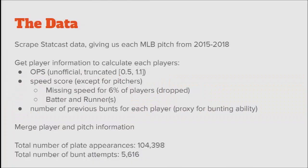We scraped StatCast data and got every single pitch from 2015 to 2018, those four seasons. We calculated OPS — it's sort of unofficial — and truncated it between 0.5 and 1.1 because you occasionally get OPS values of like five, which is unreasonable. We got a speed score, which is missing for 6% of players, so we just dropped them — not ideal, but 6% is pretty small.